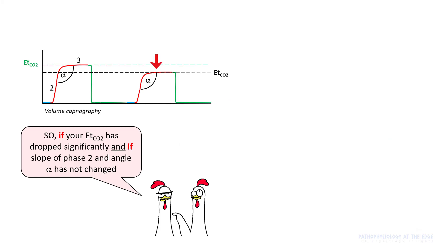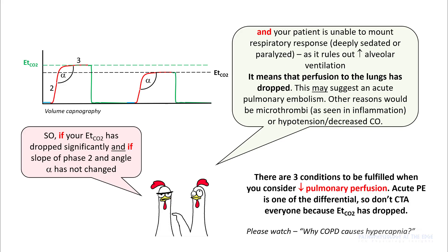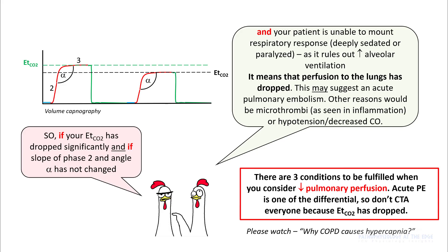If your end-tidal has dropped significantly and the slope of phase 2 and angle has not changed, and you have ruled out increased alveolar ventilation — this would be observed if your patient is unable to mount a respiratory response, for example if deeply sedated or paralyzed — that would mean perfusion to the lungs has dropped. This may suggest acute pulmonary embolism in the correct settings. Other reasons include microthrombi as seen in inflammation, or hypotension and decreased cardiac output.